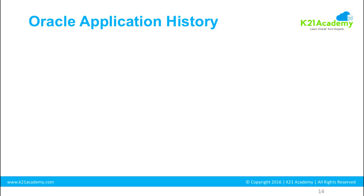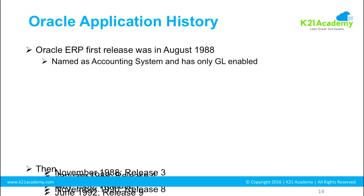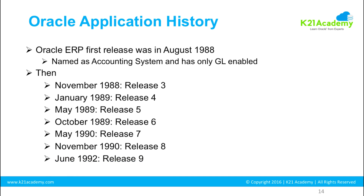Now let's start with the history of Oracle eBusiness Suite. Oracle ERP, which stands for Enterprise Resource Planning, was first introduced in 1988. Initially only a journal ledger was enabled — a financial system named as an accounting system — and at the time it was only a General Ledger (GL). Oracle then released various versions from release 3, 4, 5, 6, 7, 8, and 9, all from 1988 to 1992.